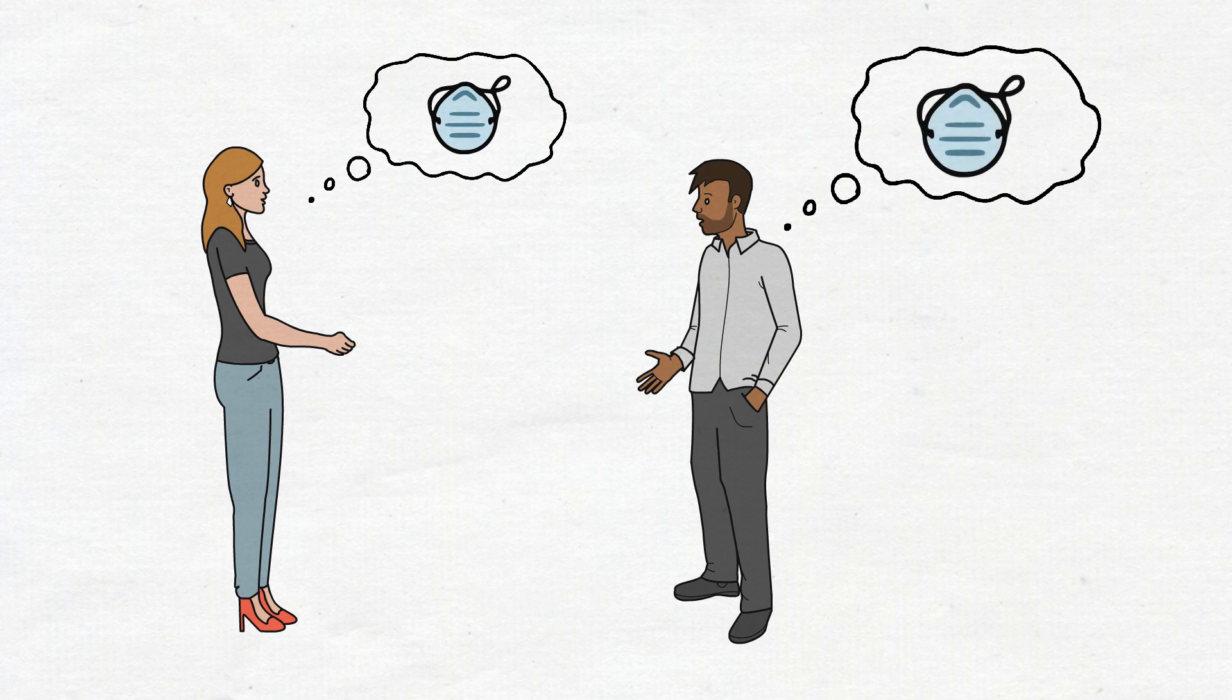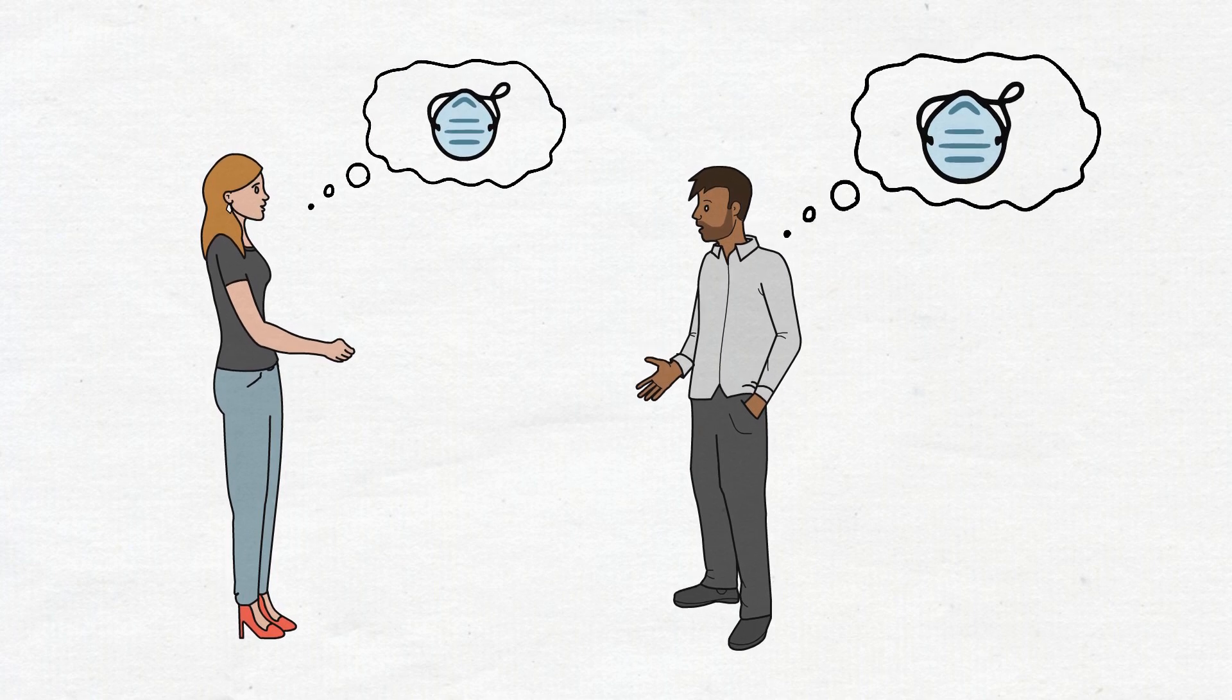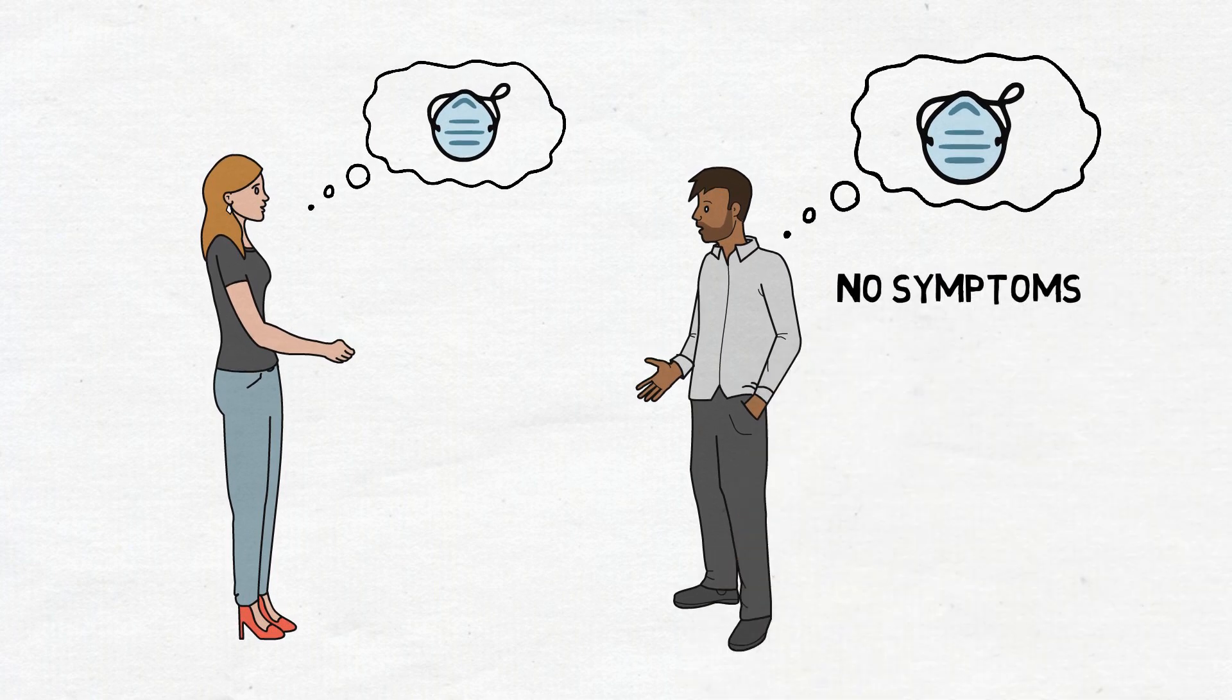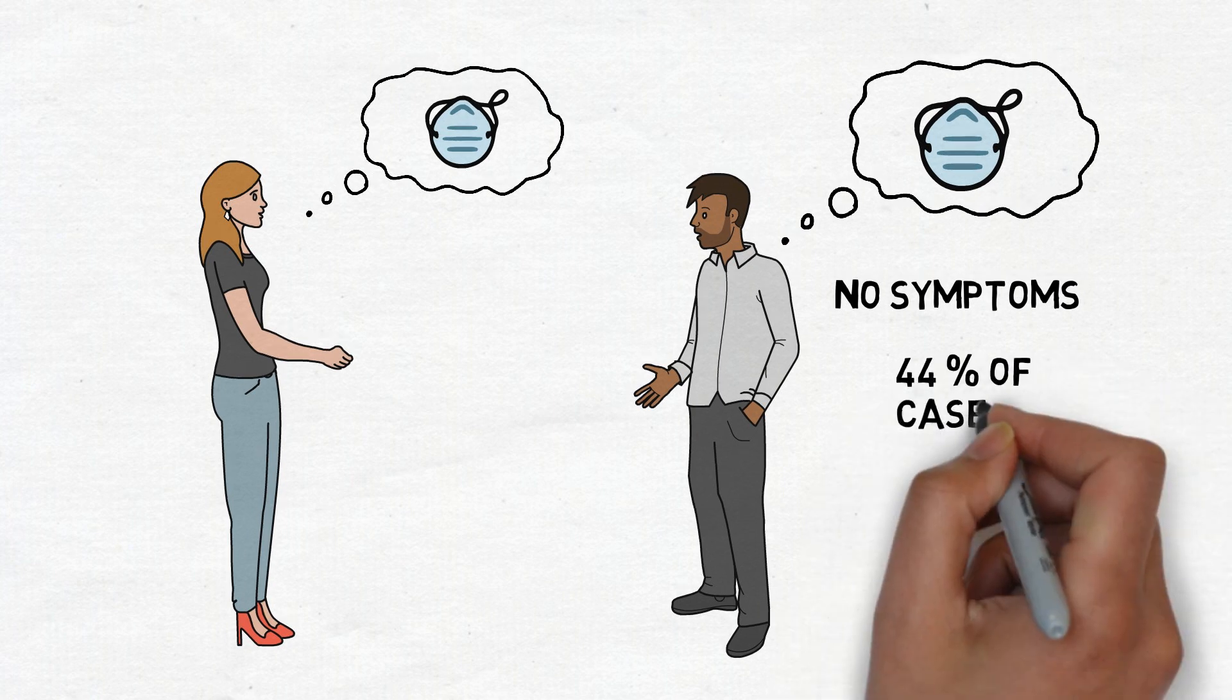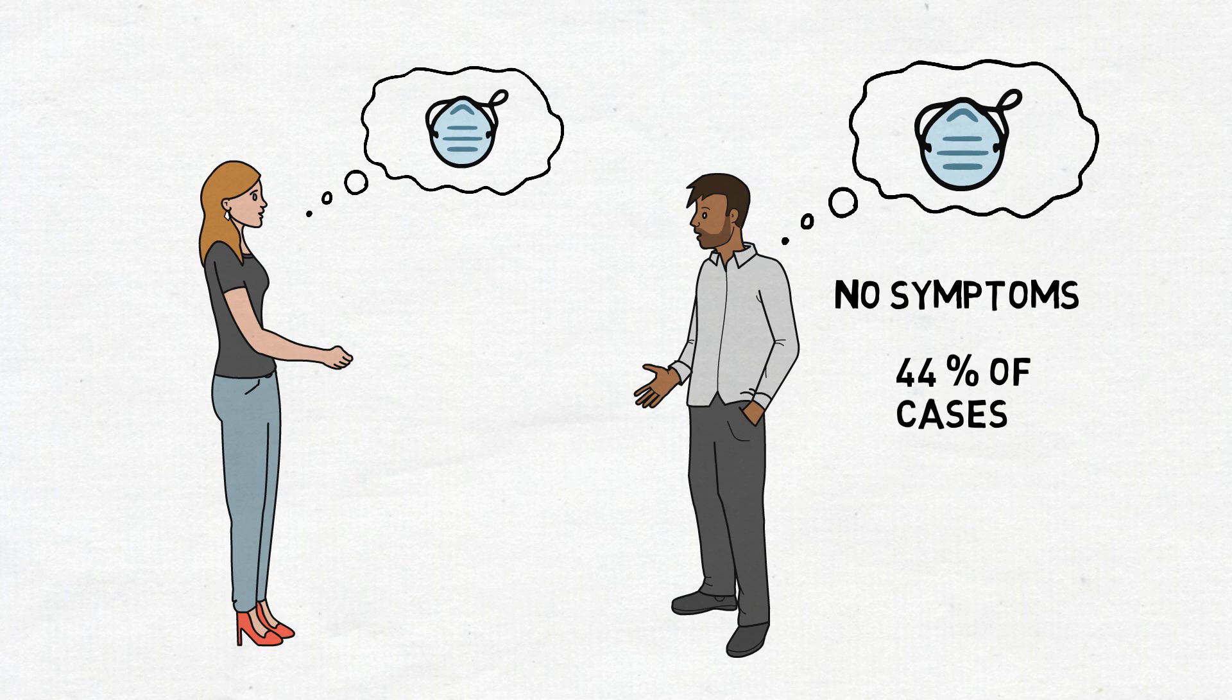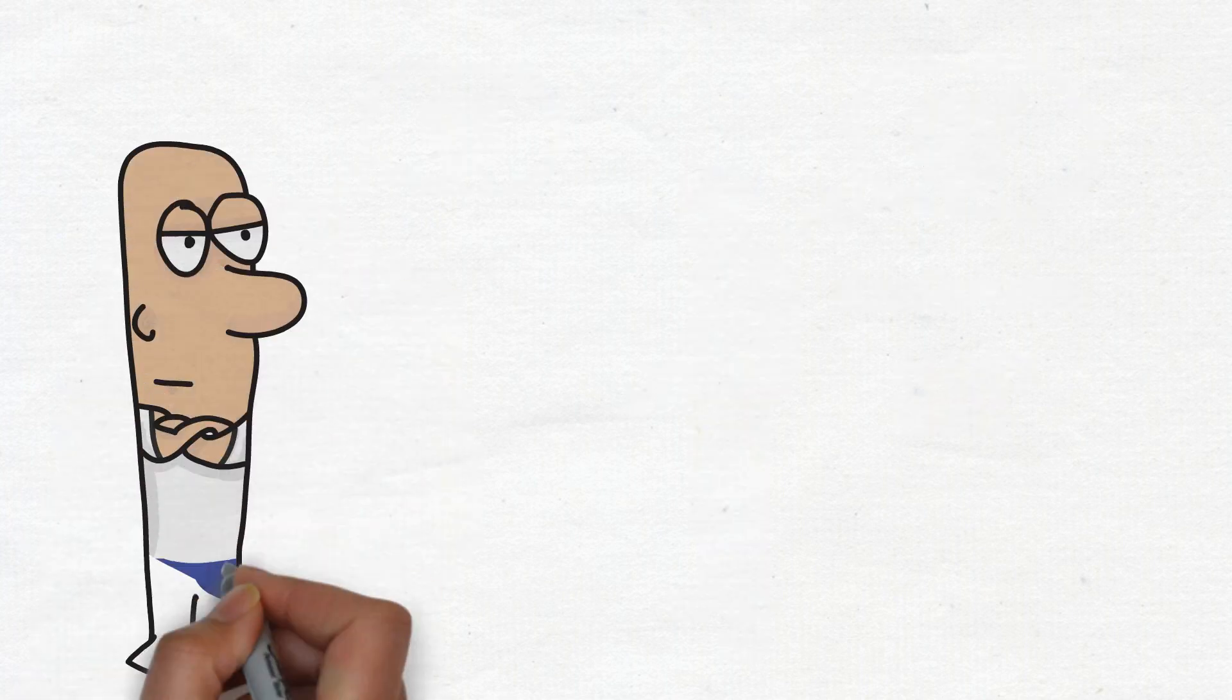At this point, you may say, hey, wait a minute, people who have COVID should stay at home and not roam the streets. You are right, but the problem is that people with COVID often have no symptoms. In fact, a Hong Kong University study suggests that 44% of cases are caused by people without symptoms at the time of transmission.